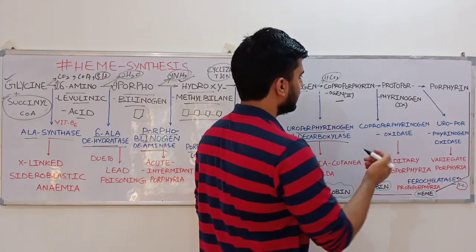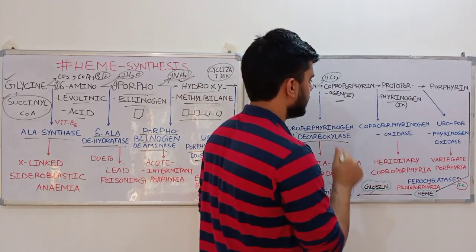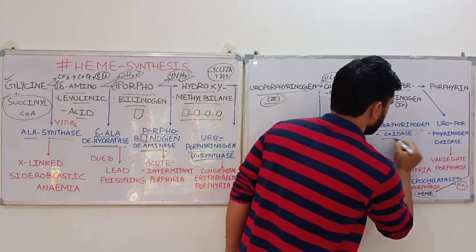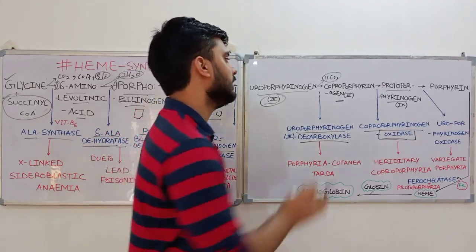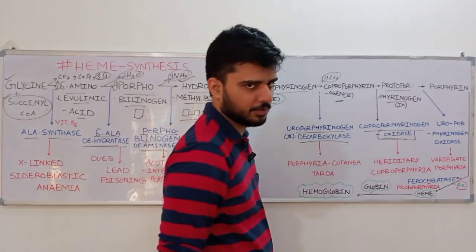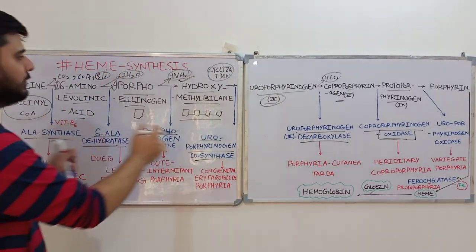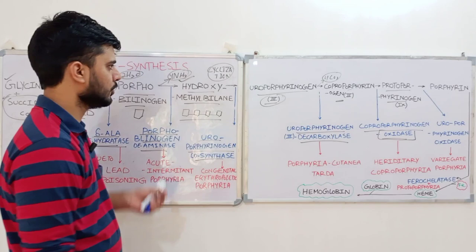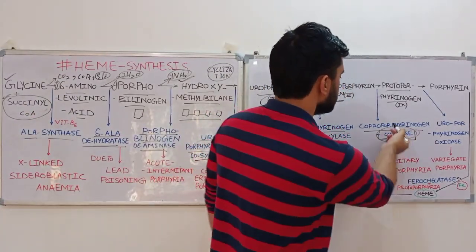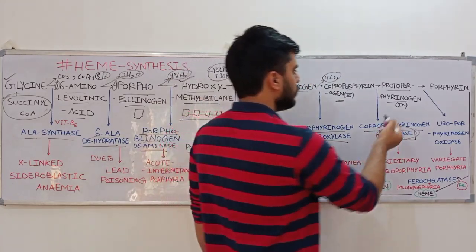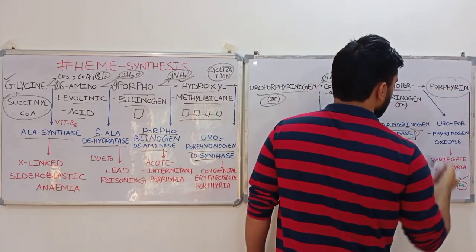Coproporphyrinogen III is then converted into protoporphyrinogen IX by the enzyme coproporphyrinogen oxidase. Oxidases are present within the mitochondria only, so this step takes place in the mitochondria. To summarize the locations: the first step is in the mitochondria, the intermediate steps are in the cytoplasm, and then the final steps return to the mitochondria.